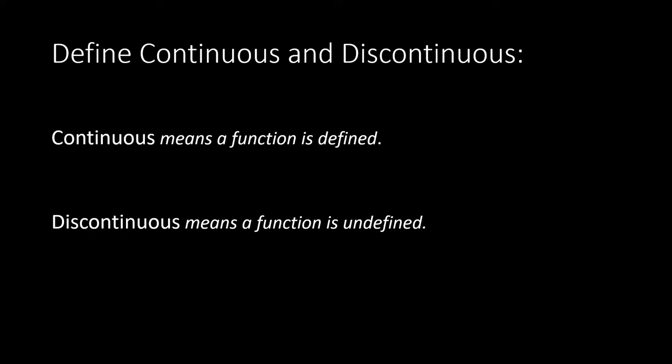On your screen there I have the definition of what a continuous function means and what a discontinuous function means. A continuous function is a defined function. If I have a function of y and I substitute an x value — for example, y equals 2x — for this function we know for all x values it is continuous, even zero. If x is close to zero, y is zero. The fact that you have an answer, it's not undefined, means that function is continuous at that x value. When a function equals zero it's still defined, so many students confuse the two and think zero means undefined.